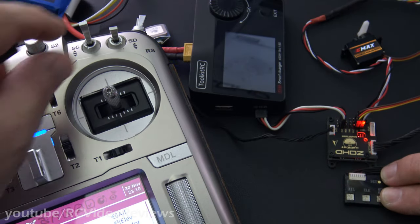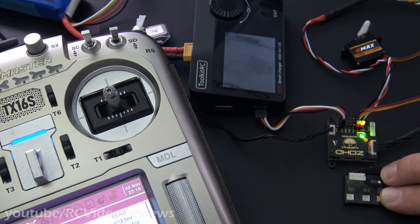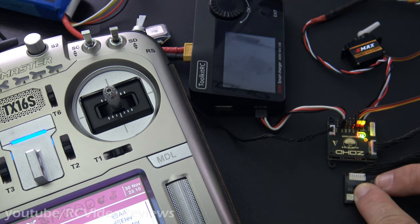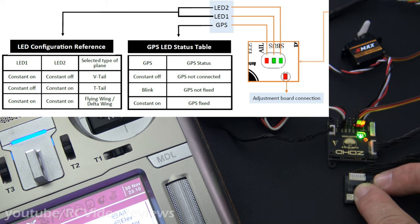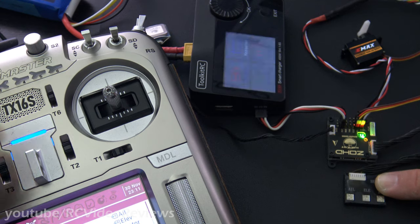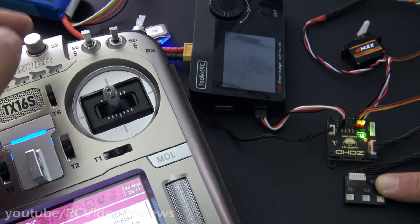The first thing we'll do is set up the airframe type. We'll do that by entering stabilized mode — in my case I'll push the switch down, and notice I've got a solid green LED. Now I'm going to long press the set button for five seconds. I'll let go, then press the button again, and again, and again. That toggles through all the airframe types: T-tail, V-tail, and flying wing. I'll go back to T-tail, and once I have the one I want I'll long press the set button again. You'll see the servo dance a little bit, and now I've got full aileron deflection on the servo in stabilized mode.